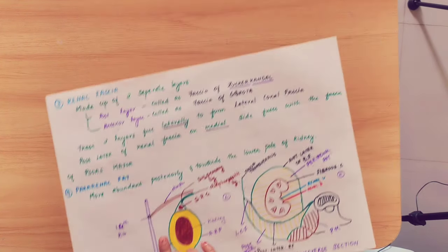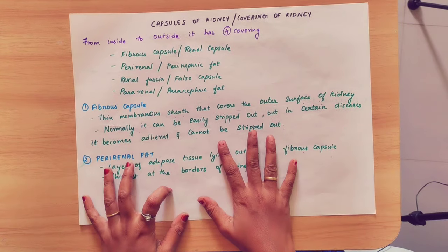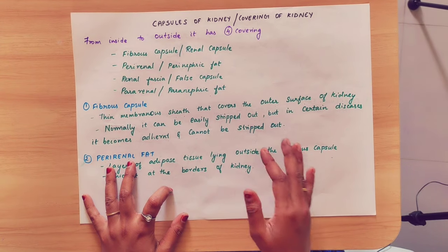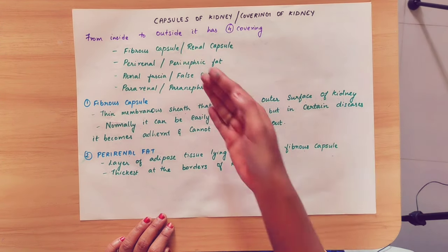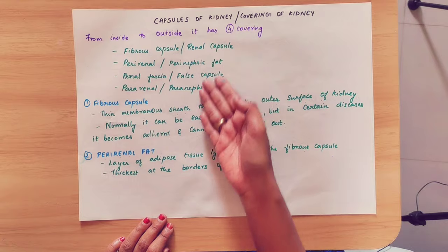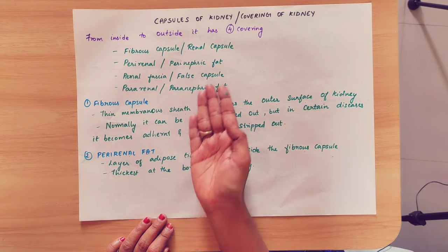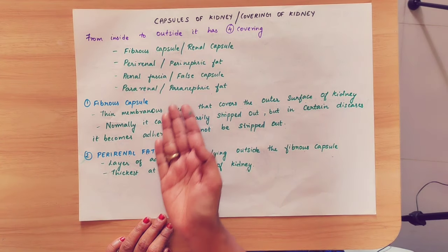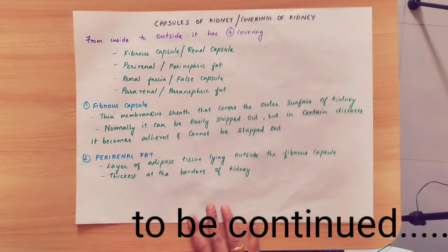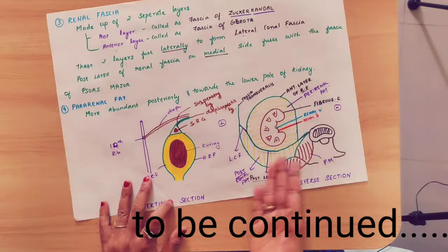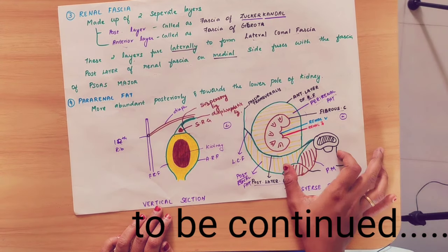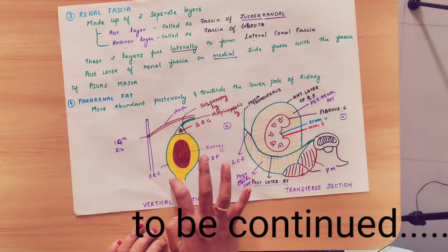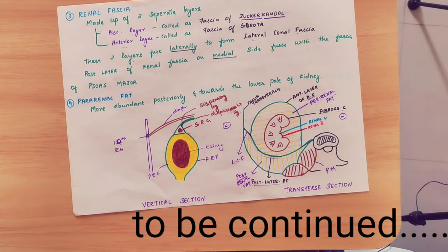So this is all about the coverings or capsules of the kidney. There are four coverings, and you should know the details of each covering. You have to draw these two diagrams — the transverse section and the vertical section.